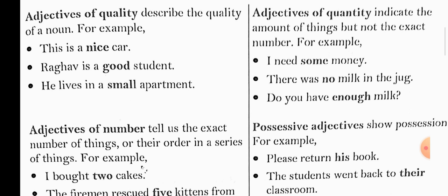Second example: Raghav is a good student. Raghav is how? Good. Here the word 'good' is an adjective and it is telling the quality of the noun 'student.' Third example: He lives in a small apartment. How is the apartment? Small. Here the word 'small' is an adjective of quality.